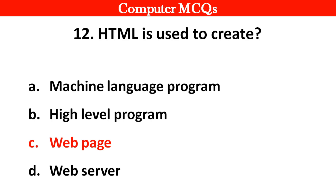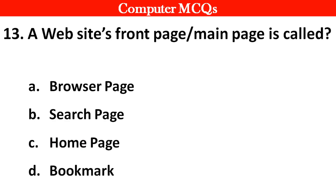A website's front page or main page is called: option A browser page, B search page, C homepage, D bookmark. Right answer is option C, homepage.